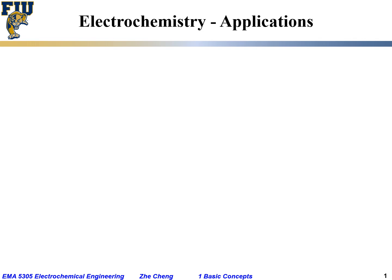Electrochemistry is actually a pretty old field, and people came across electrochemical related effects for many many years. The first example would be corrosion — people came across corrosion for thousands of years. And then even for batteries, it has a long history. The earliest battery is probably the copper-zinc battery by Volta, and that appeared in the 1790s.